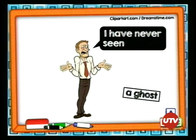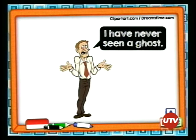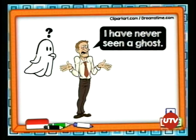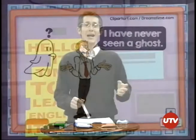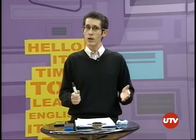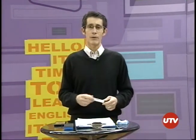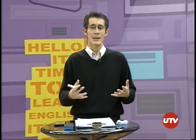Luego tenemos el verbo en participio pasado. Recordarán que el verbo siempre va en participio pasado. I have never seen — dice yo nunca he visto. I have never seen a ghost. Y miren qué es lo que le pasa: ahí está el fantasma y dice I have never seen a ghost — nunca he visto un fantasma, y ahí está el fantasma que se le aparece.